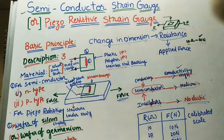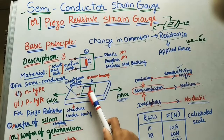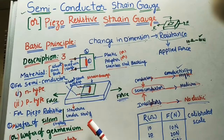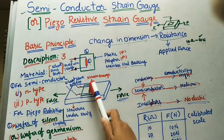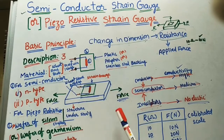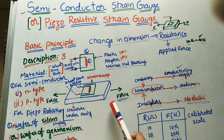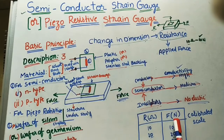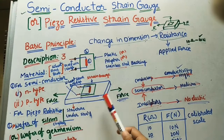By using this change in resistance, we can find the change in dimensions of the structure as well as the applied forces in calibrated form. So the Wheatstone bridge can be used for both purposes.